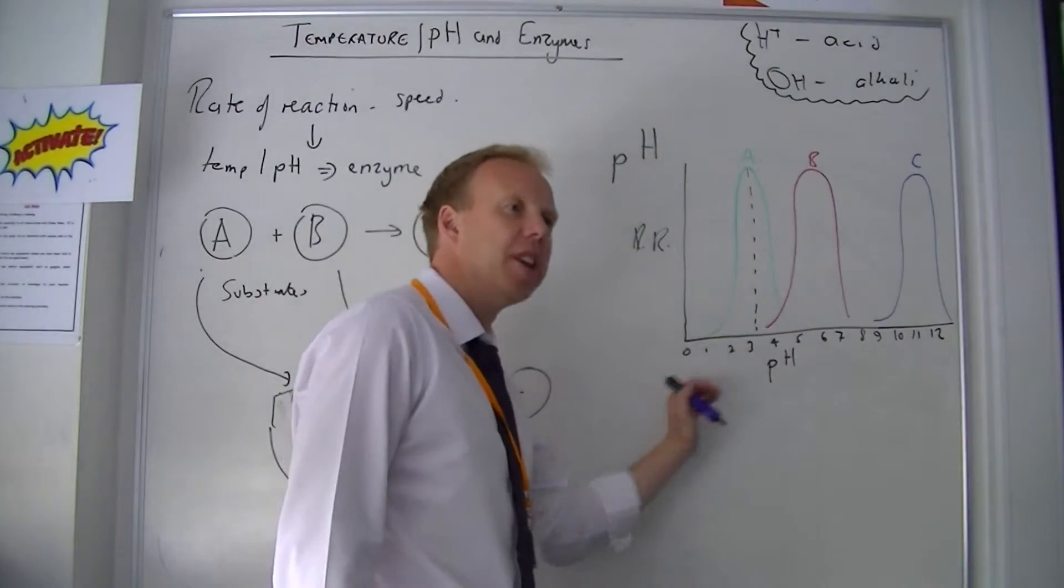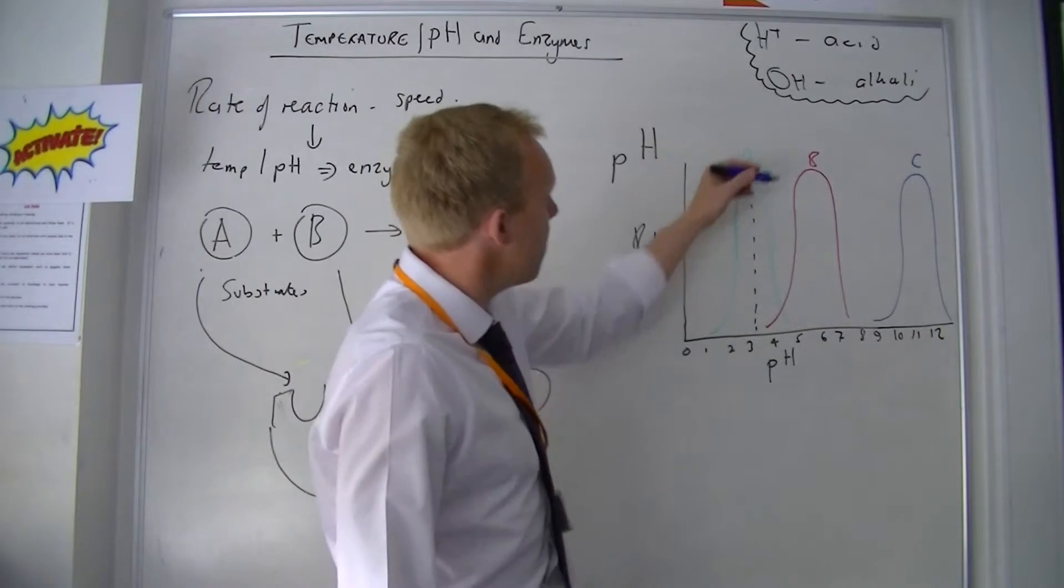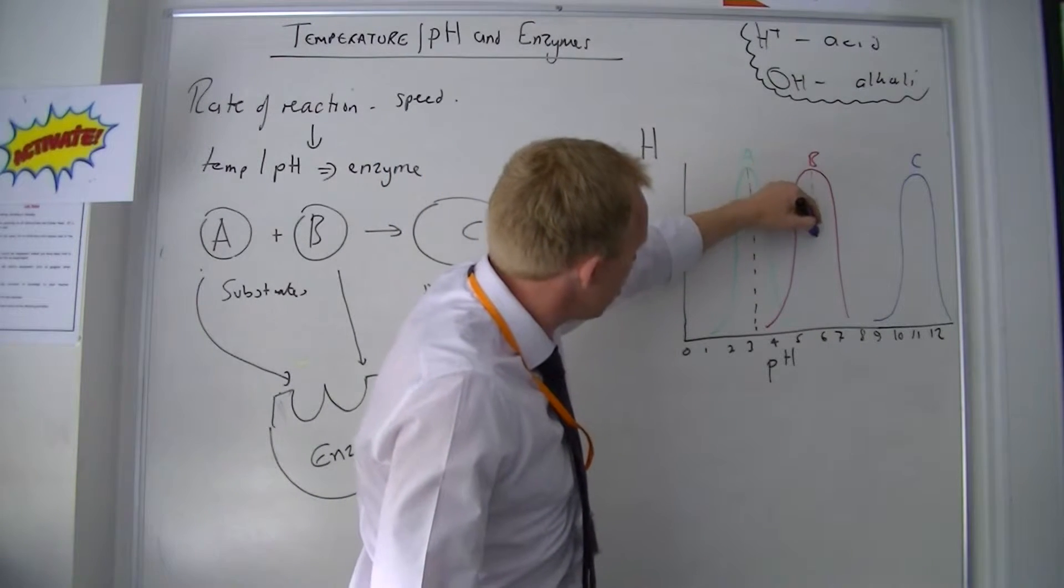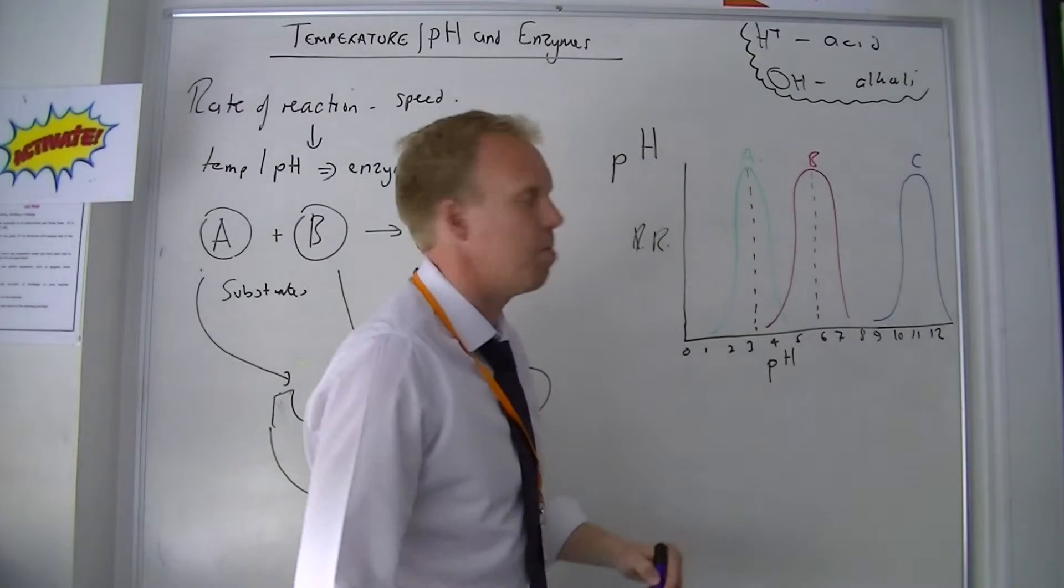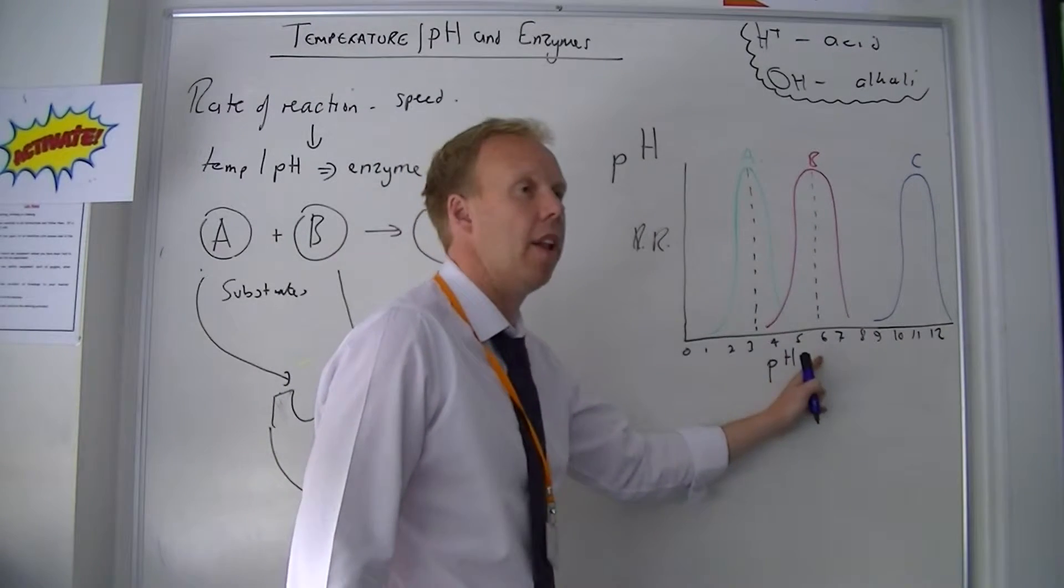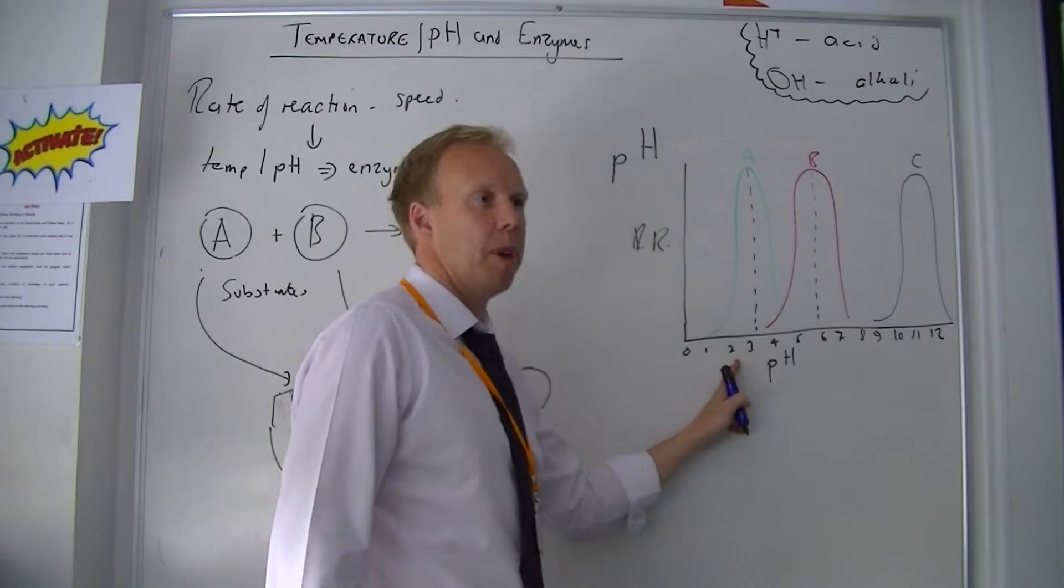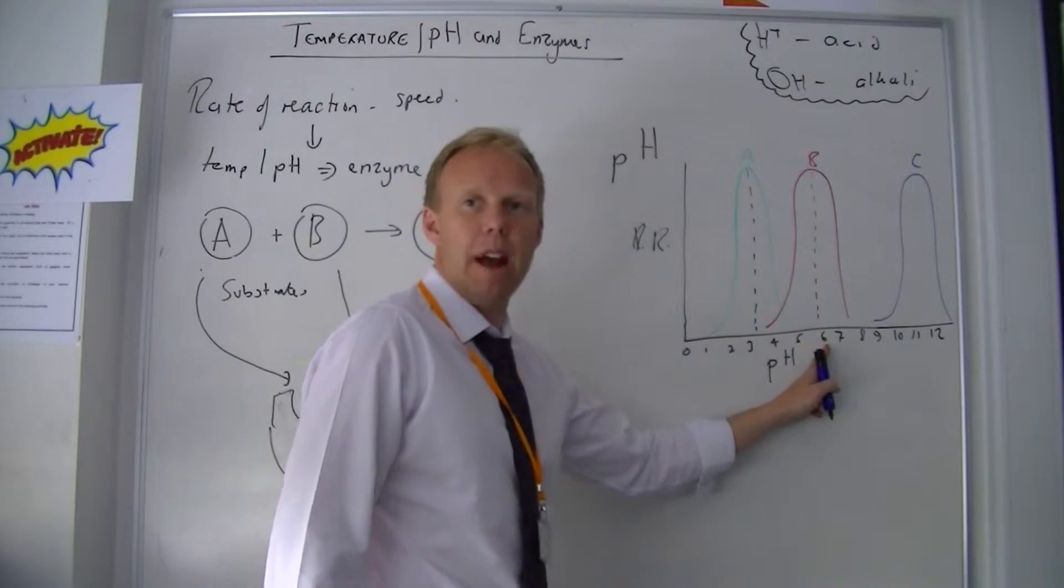But enzyme B doesn't, and I'm going to use the word like, which is bad really, but doesn't work as well in acidic pHs, but likes it around pH 6.